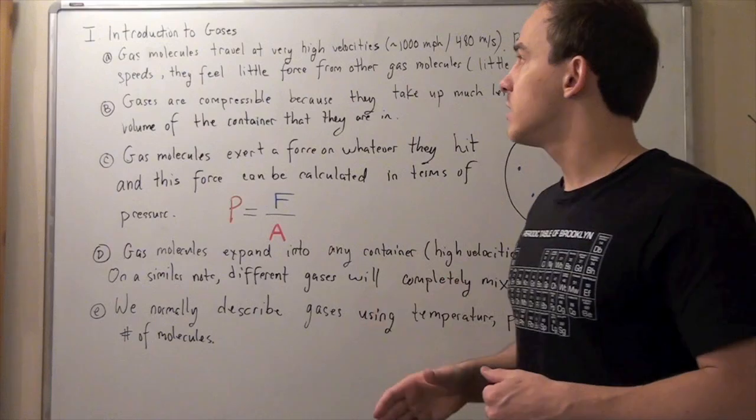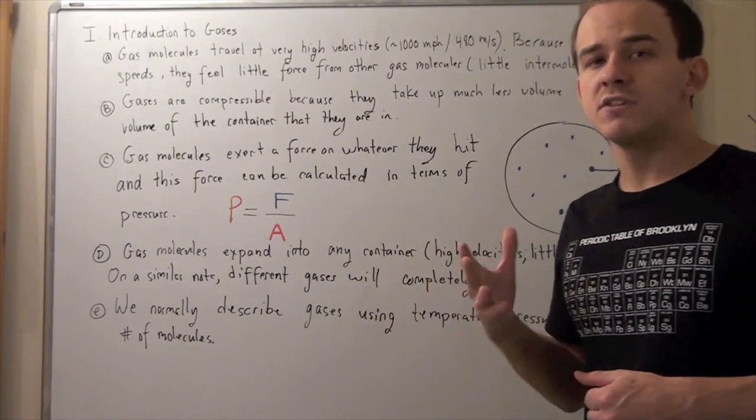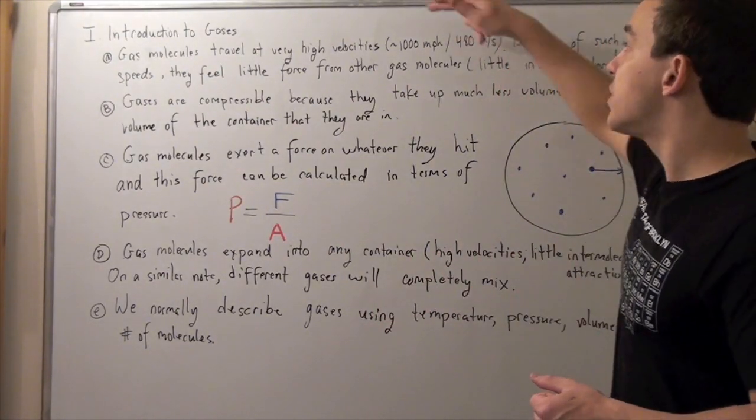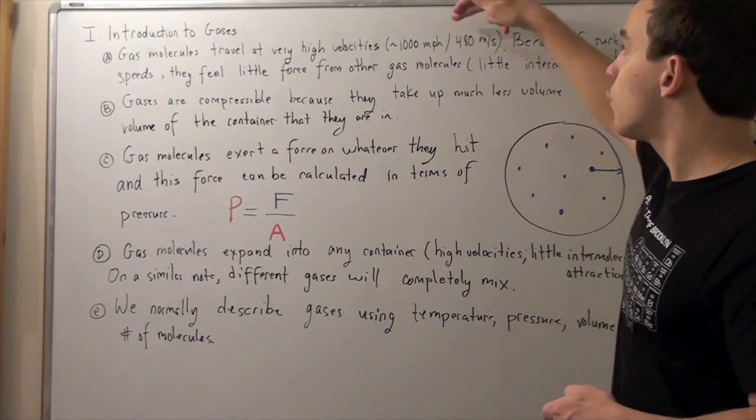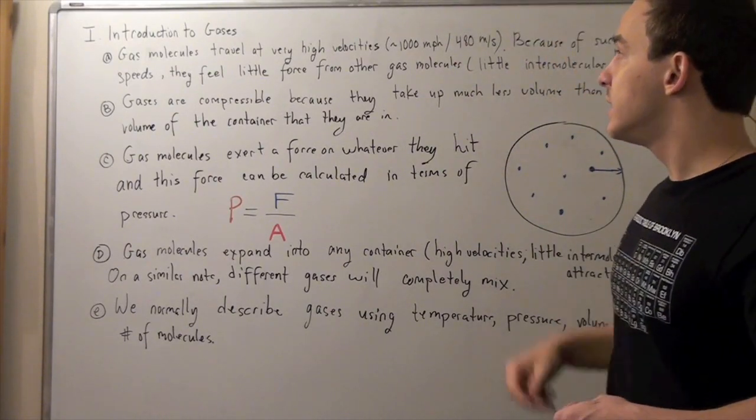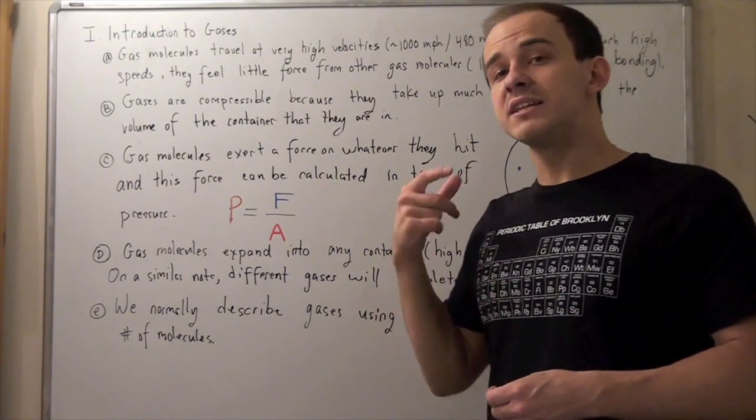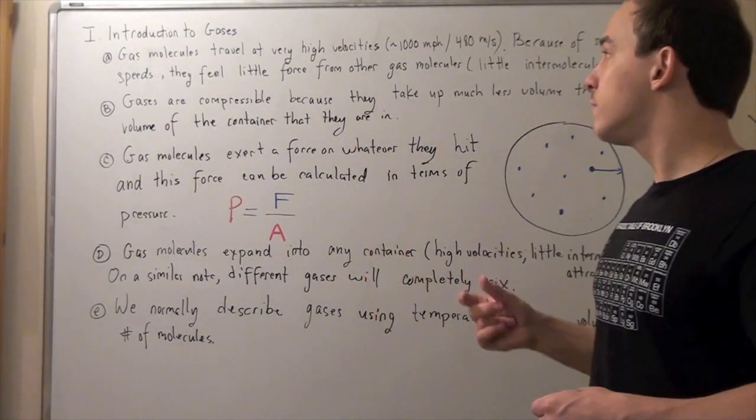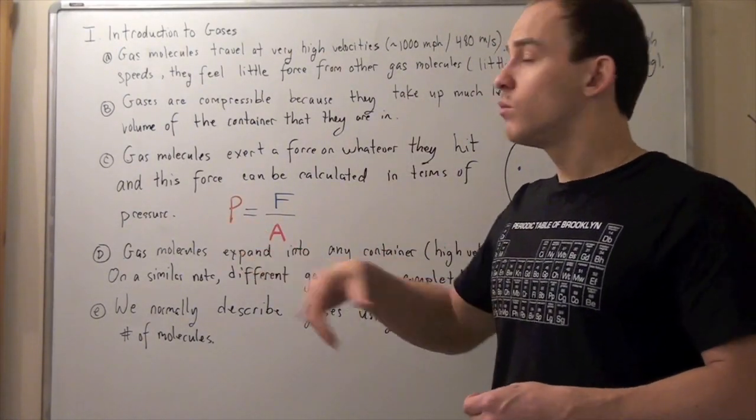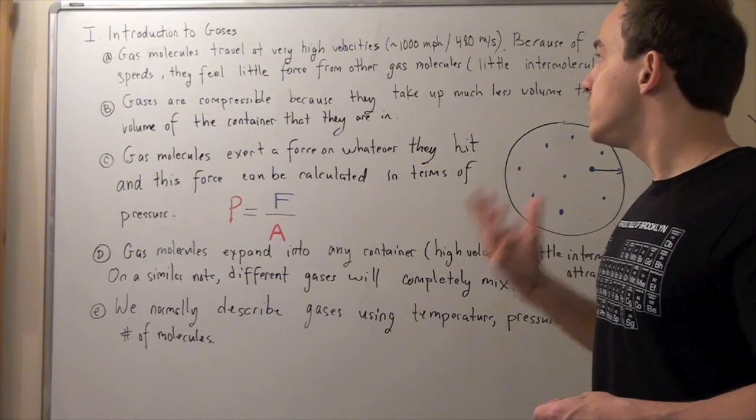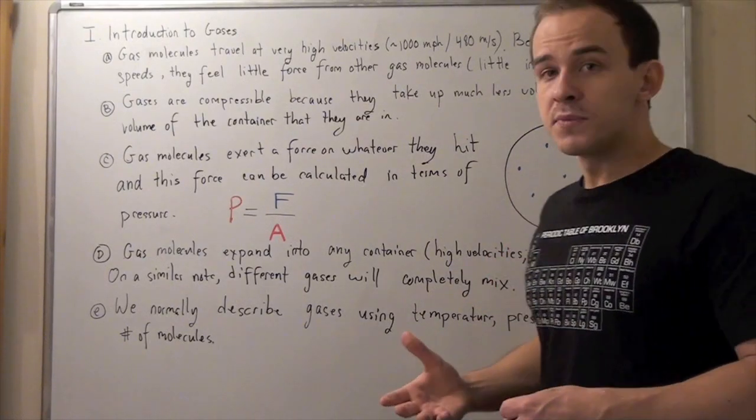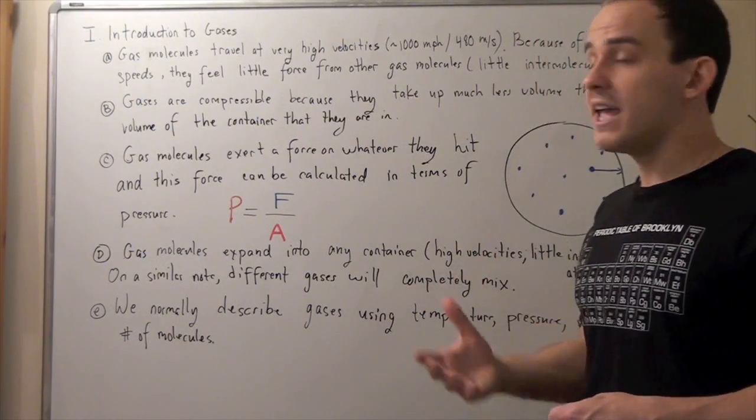Gas molecules travel at very high velocities, approximately a thousand miles per hour or 480 meters per second. If you allow a single gas molecule to travel from New York to California without being interrupted, it would take about 3 hours to get there, versus a car that would take days.